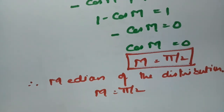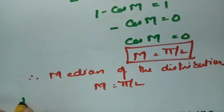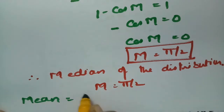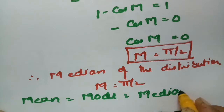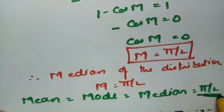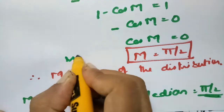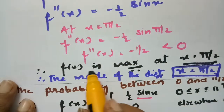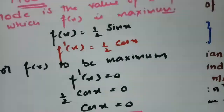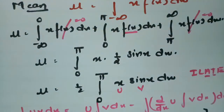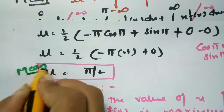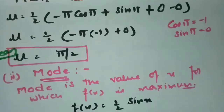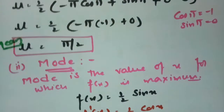Summarizing: the mean, mode, and median are all equal to π/2. This is a symmetric distribution centered at π/2.